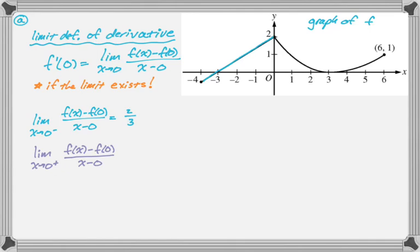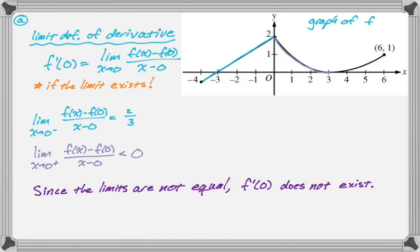What I do know, though, is the slope of the tangent line as you approach 0 from the right, the slope of the tangent line is definitely going to be negative or less than 0. So since 2 thirds is not less than 0, there's no way that f prime of 0 exists. So I'm going to write since the limits are not equal, f prime of 0 does not exist.